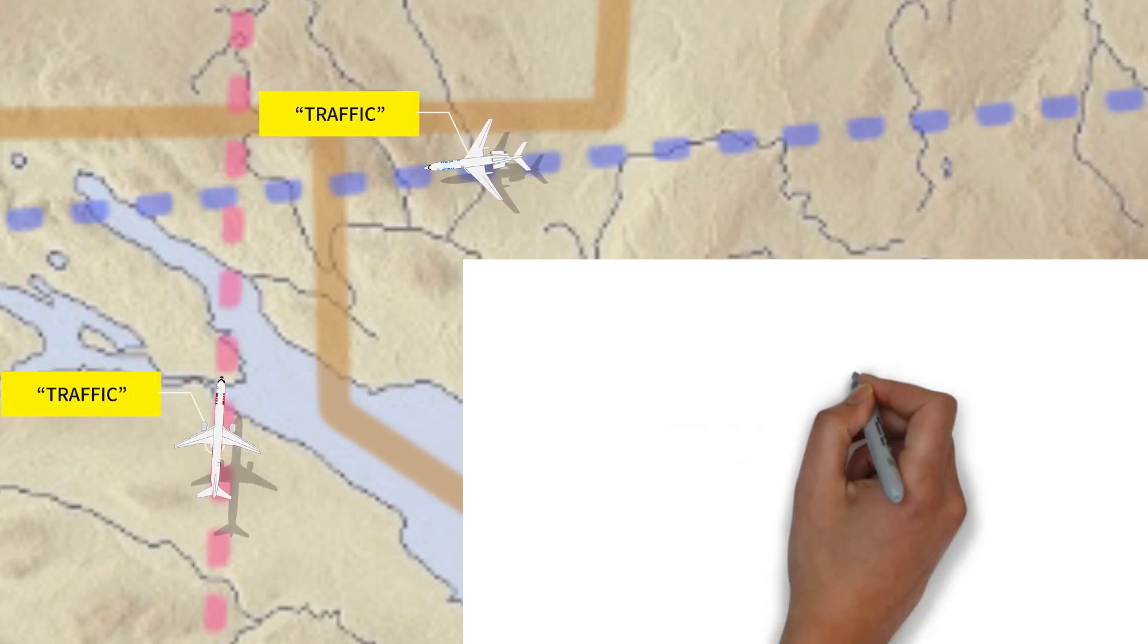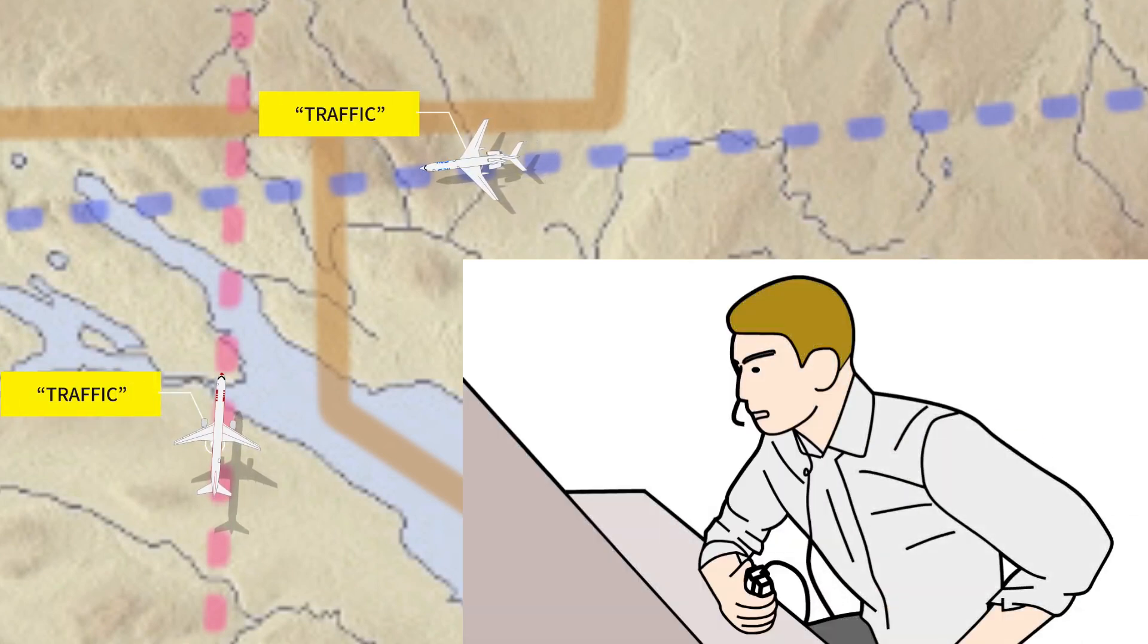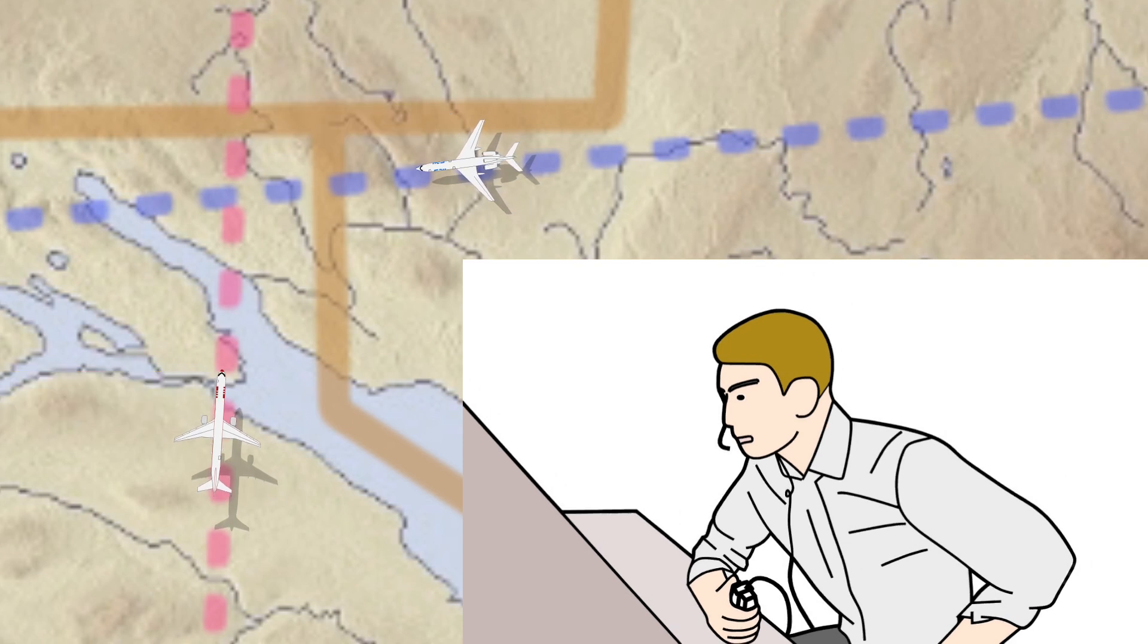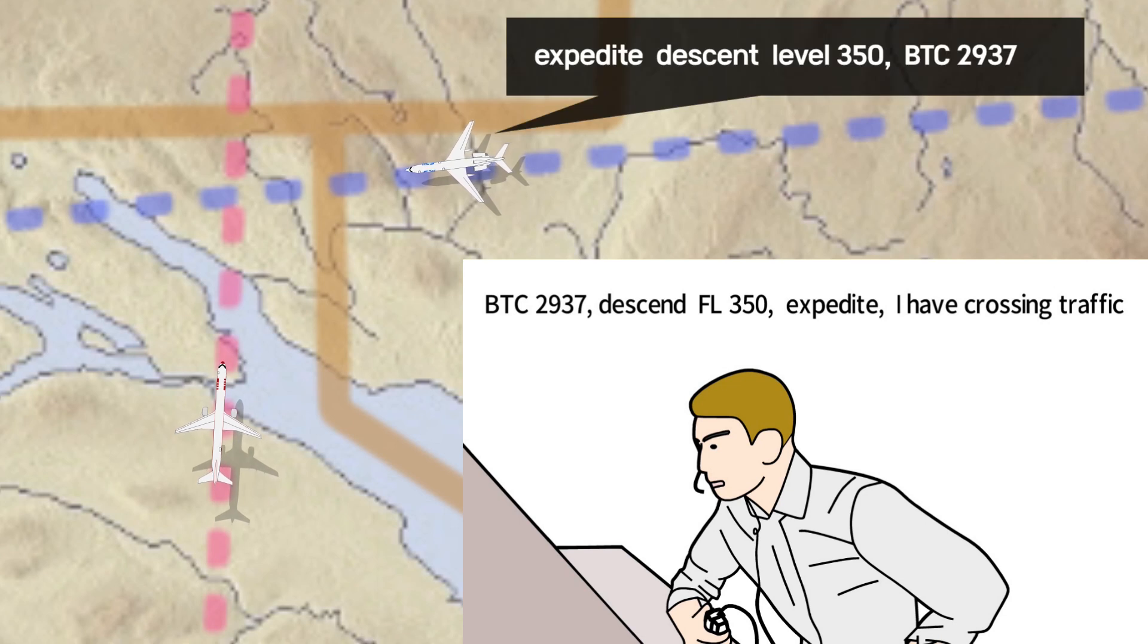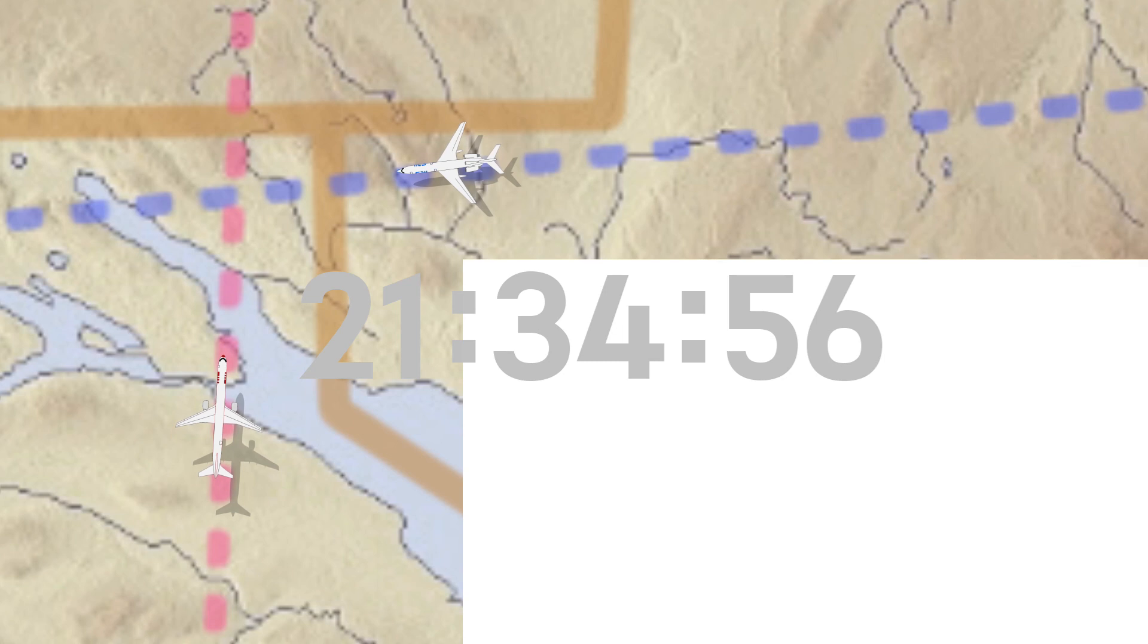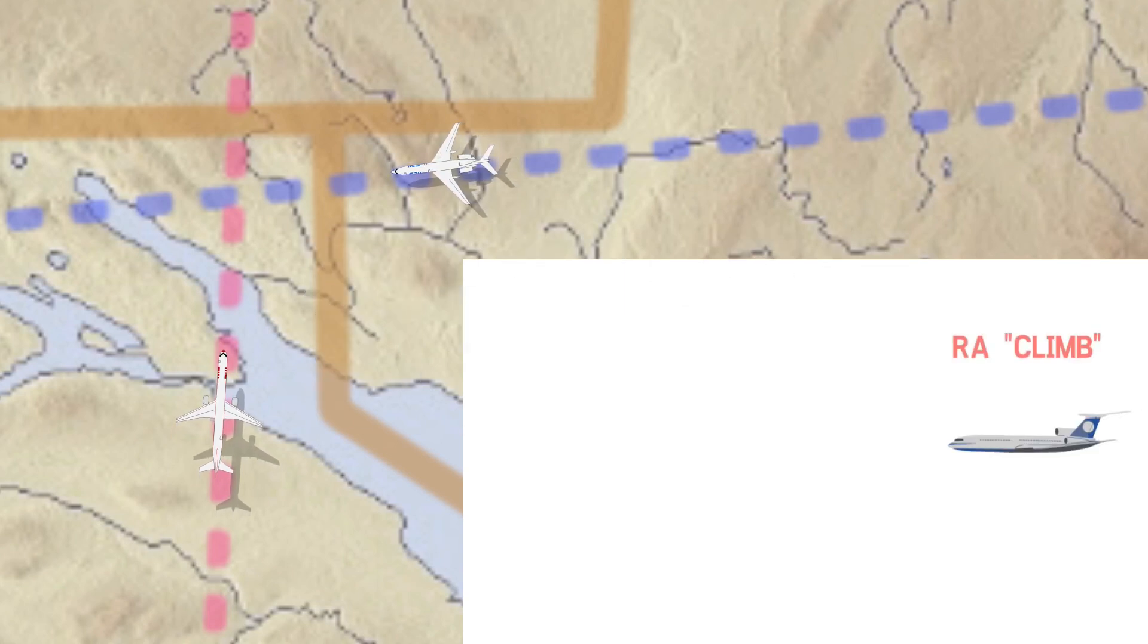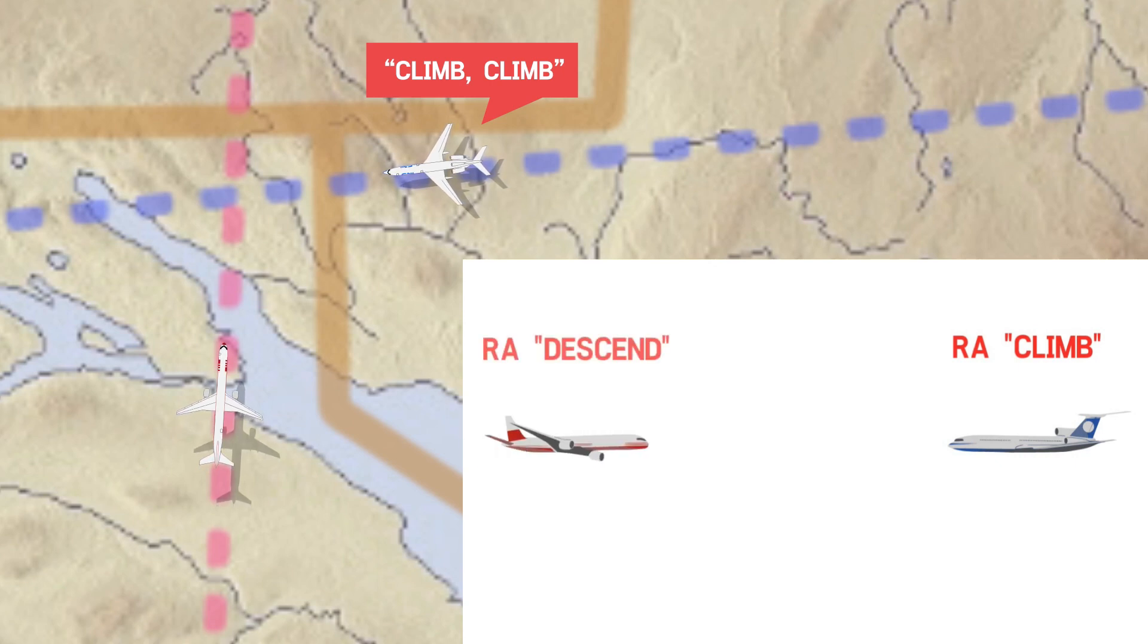DHL-611 and BTC-2937 each received TCAS TA at the same time. At this point, the controller noticed that the two aircraft were approaching each other. So the controller instructed BTC-2937 to expedite descend to flight level 350. BTC-2937 received TCAS RA alert, climb, climb. At the same time, DHL-611 received the TCAS RA, descend, descend.